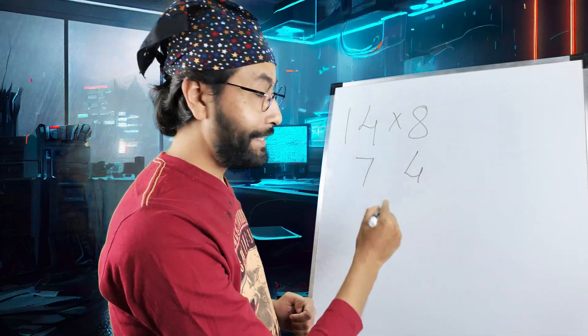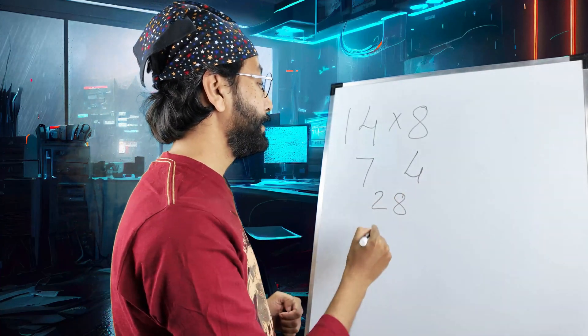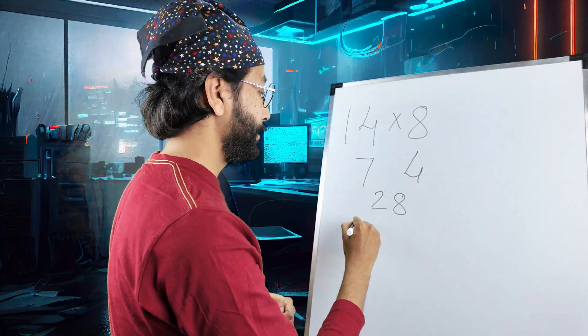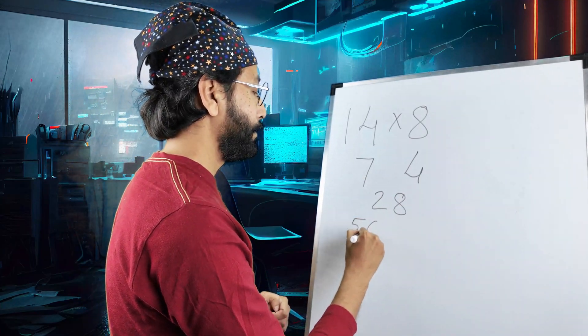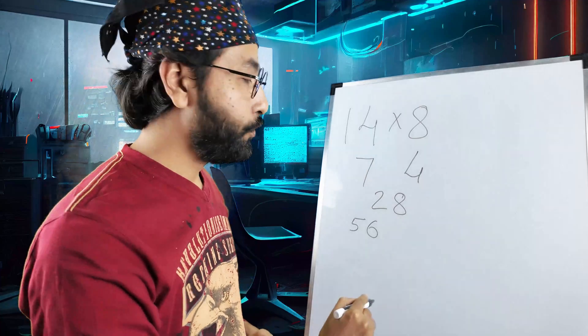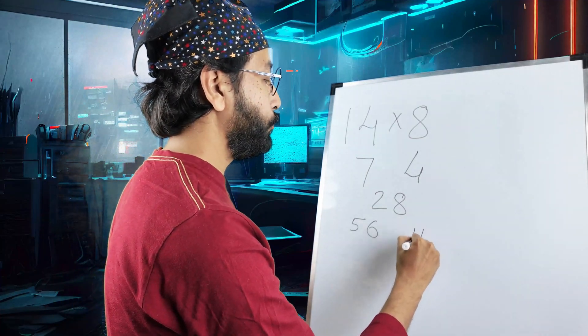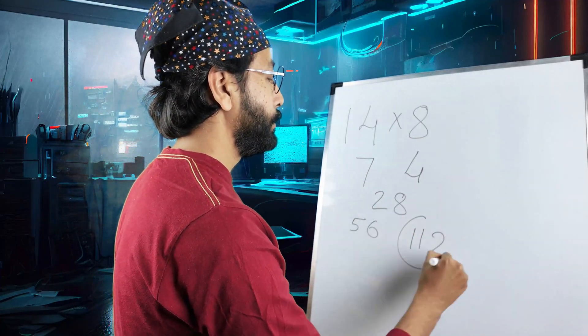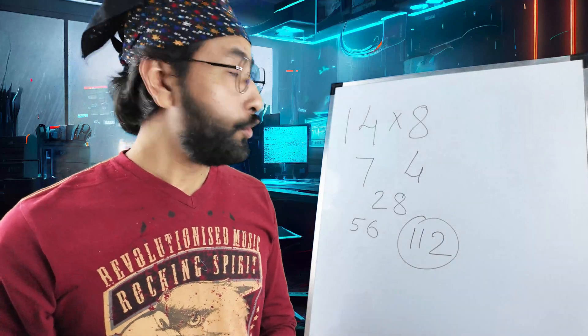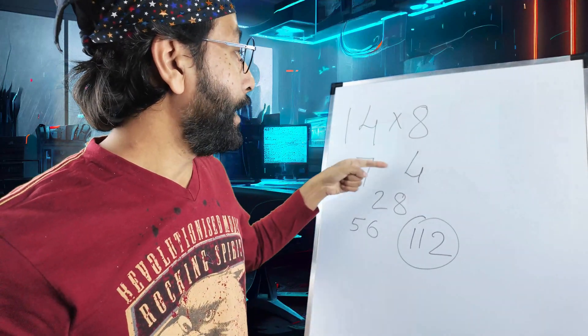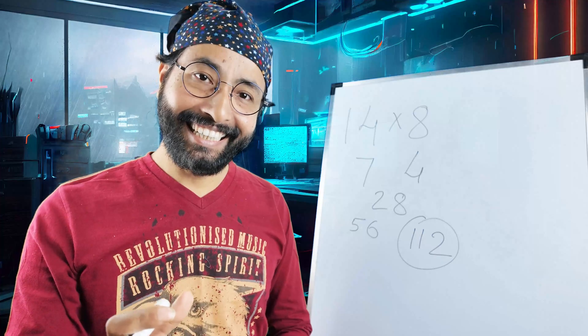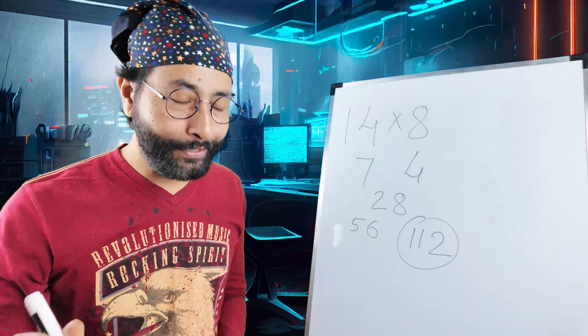So 4 sevens is 28. Double of this, 56. And double of 56? 112. This is your answer. 2 times half and 2 times doubled. Easy? So this is the foundation of this trick.